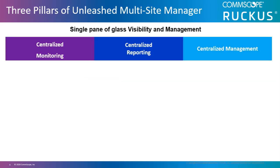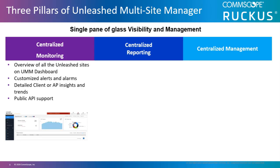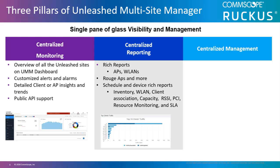The three pillars of UMM include centralized monitoring, centralized reporting, and centralized management. Centralized monitoring includes features such as monitoring the health status of each Unleashed site on the dashboard, monitoring events and alarms, and seeing client connectivity trends. Centralized reporting includes rich reports on device inventory, WLANs, client associations, capacity, RSSI, and PCI resource monitoring.